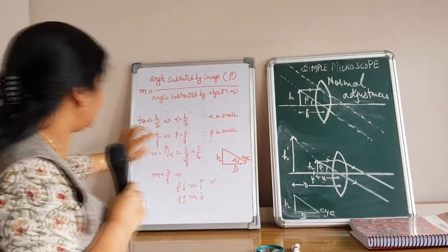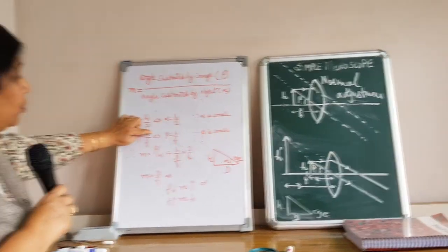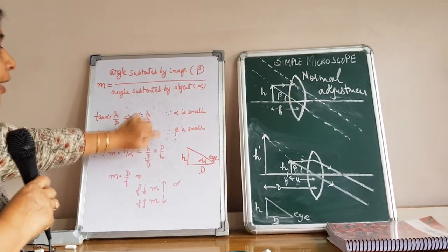From this figure, what do we observe? That tan beta is equal to H by F. That is, beta equal to H by F.